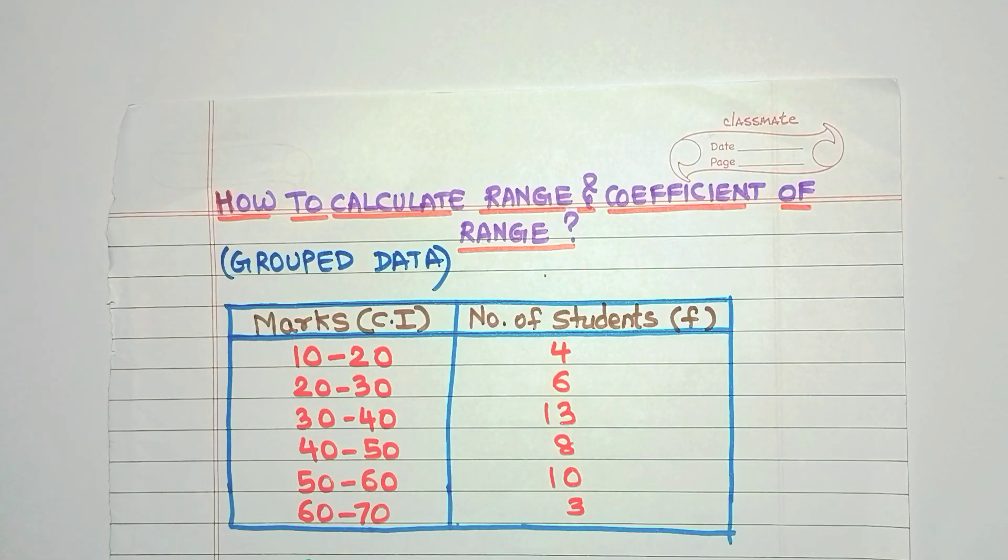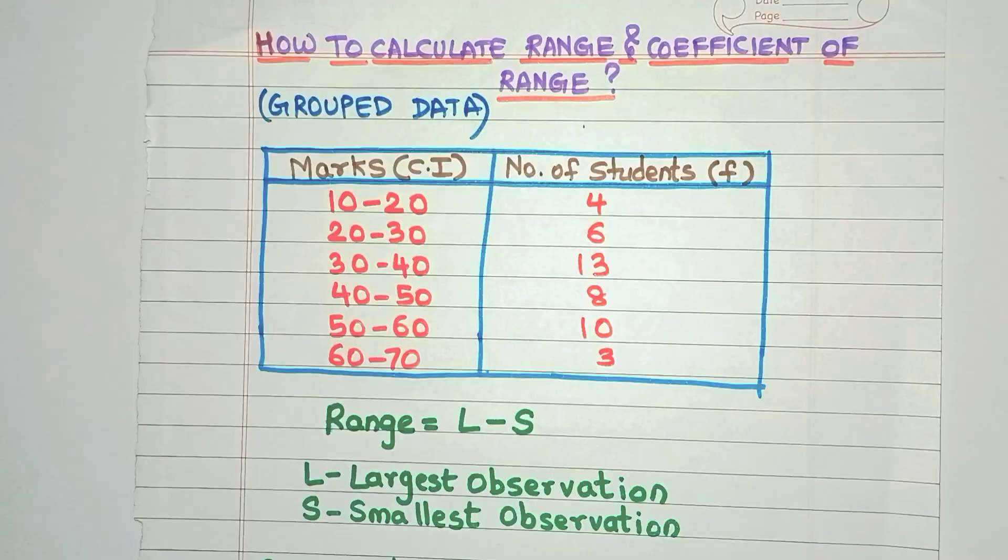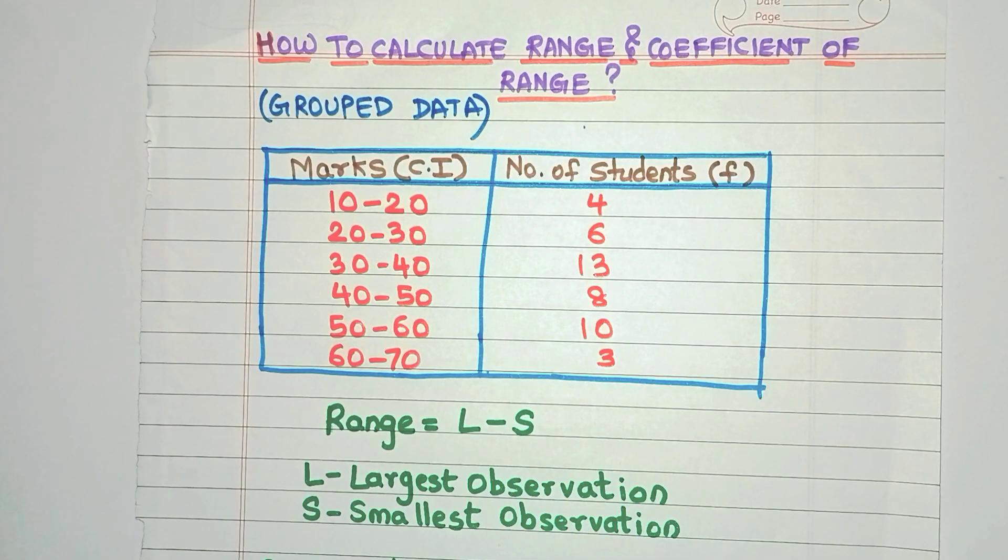Now range tells us how much the data is spread out. The formula is range equal to L minus S, where L is the largest observation and S is the smallest observation.